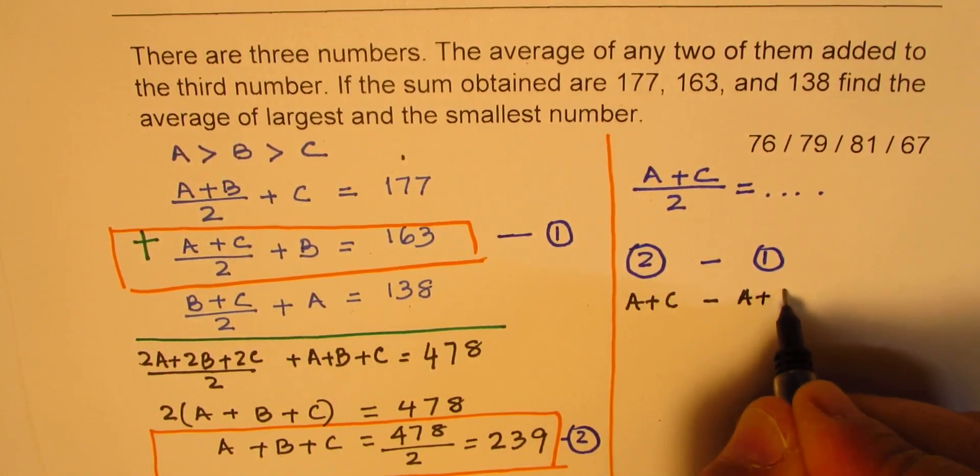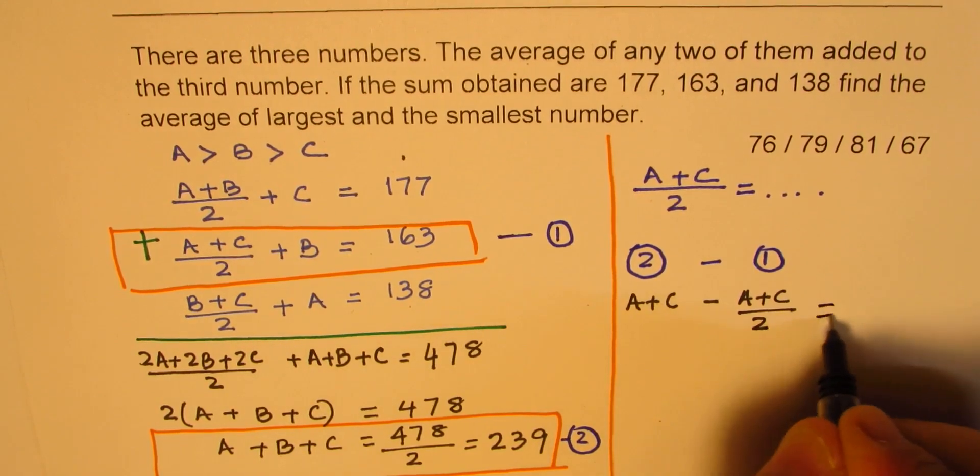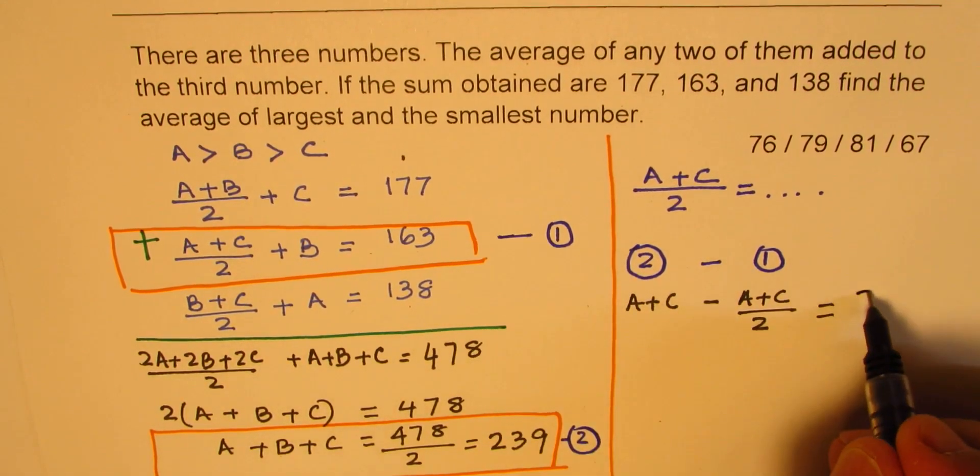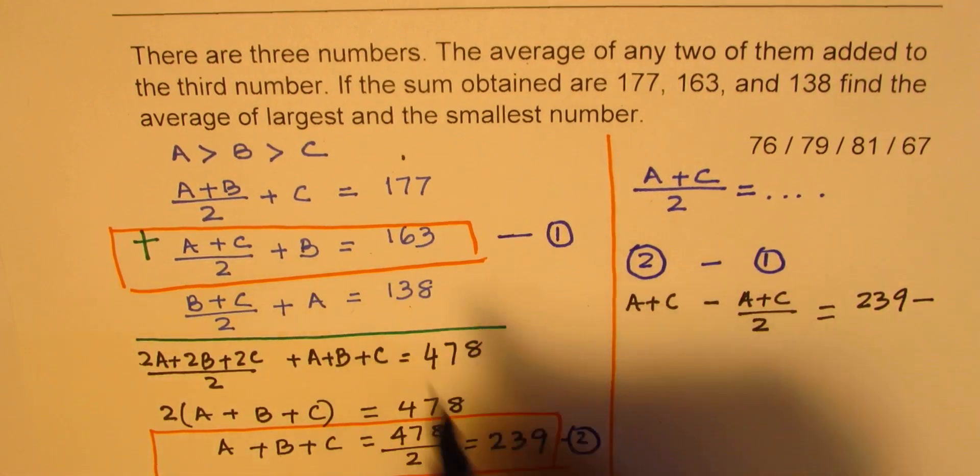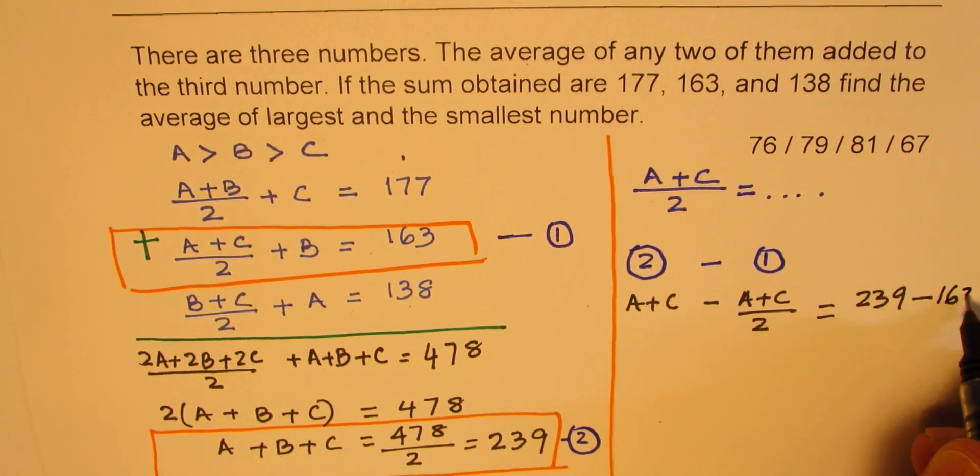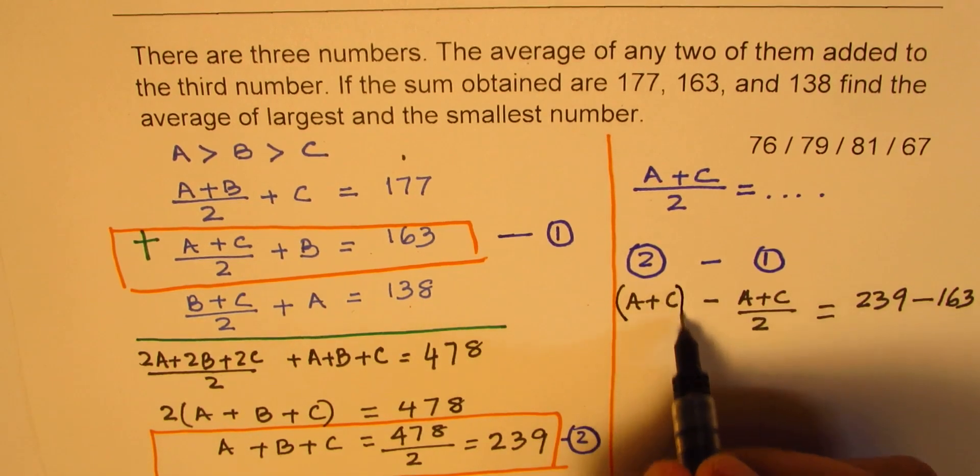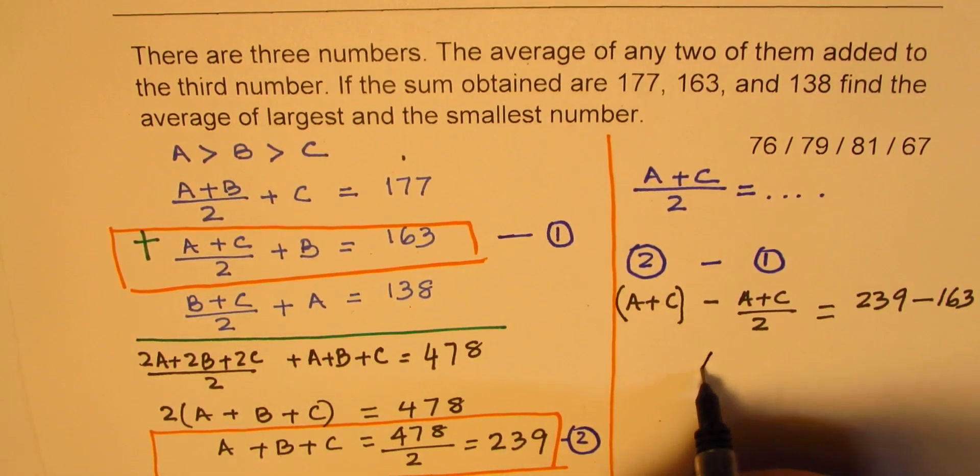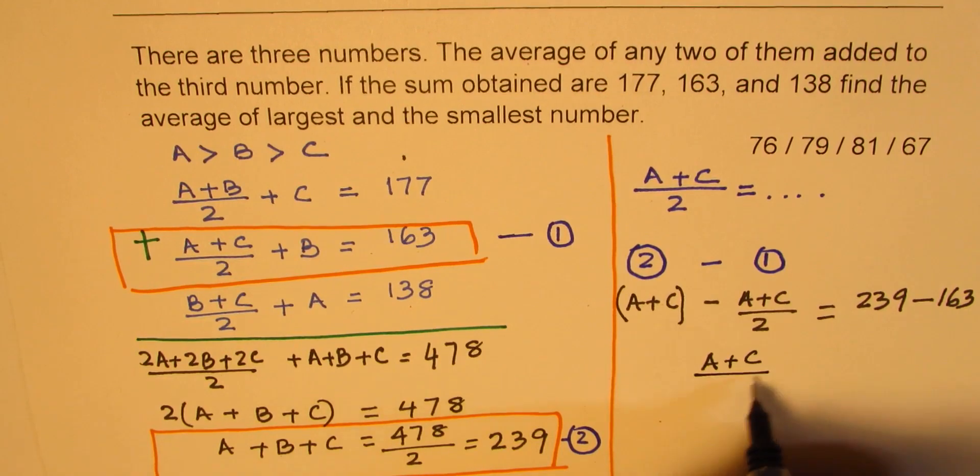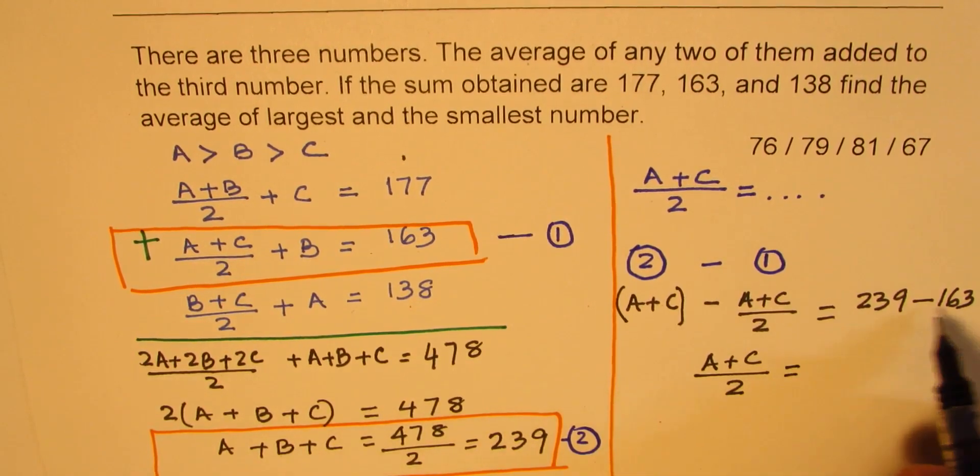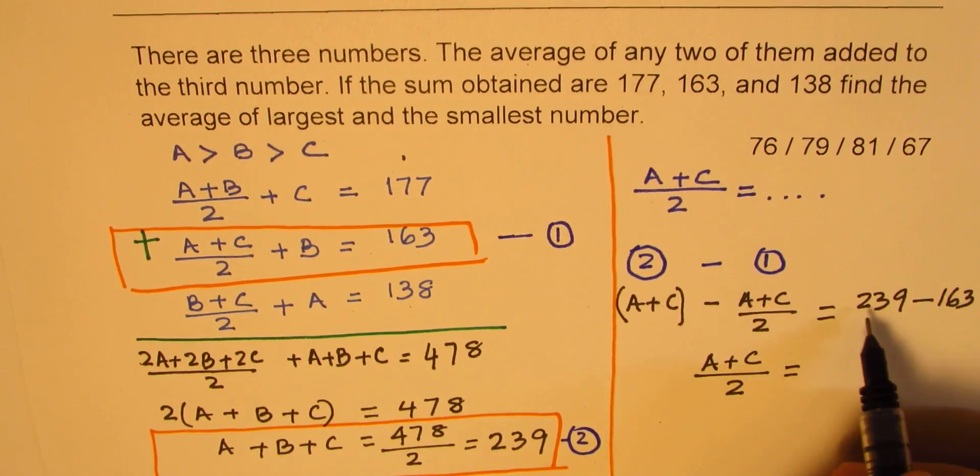So we have A+C minus (A+C)/2, and on the right side we get 239 take away 163. Now this is what we need - A+C minus half of it is basically half of A+C. And here when we take away 9 take away 3 is 6, and 13 take away 6 is 7, so we get 76 as our answer.